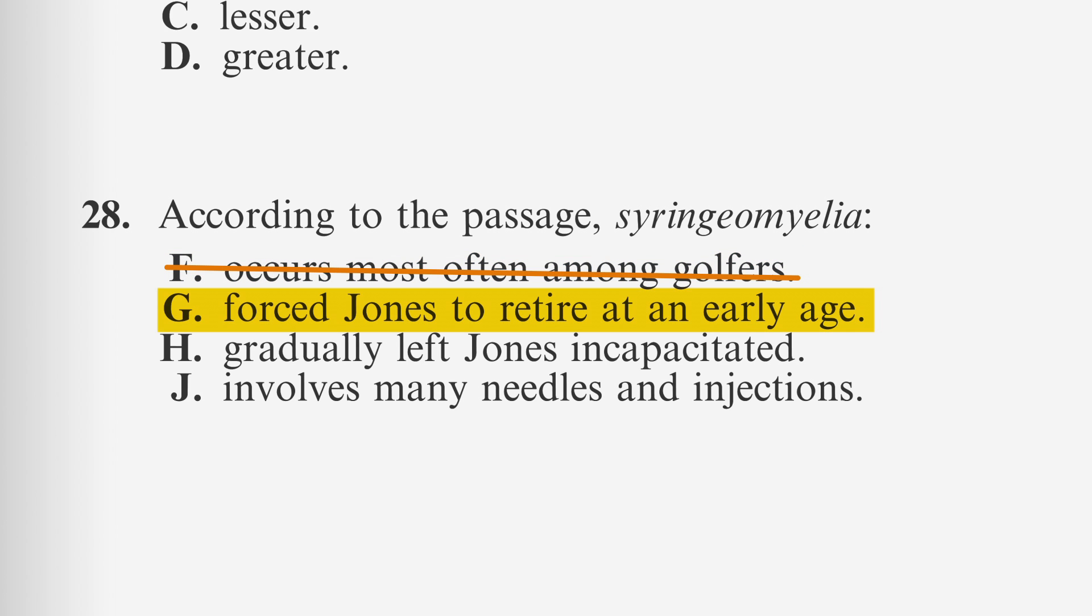G states that it forced Jones to retire at an early age. While that might be the case, this is a specific detail question, and the passage doesn't explicitly say that he retired early. H states that the disease gradually left Jones incapacitated. Well, the passage says that the disease degenerates the motor and sensory nerves, followed by how it confined Jones to a wheelchair. That is another way of saying that it gradually left Jones incapacitated.